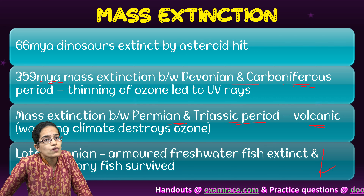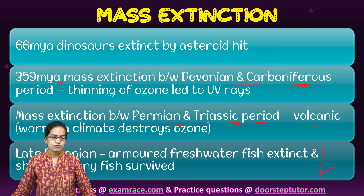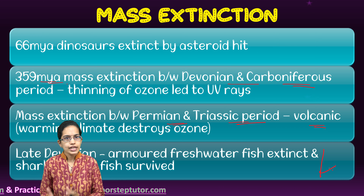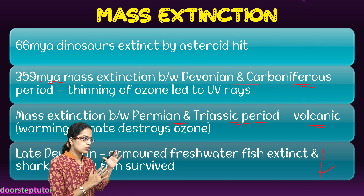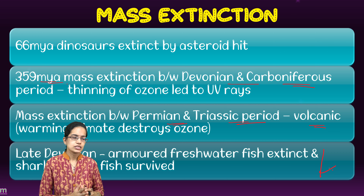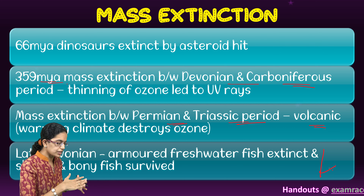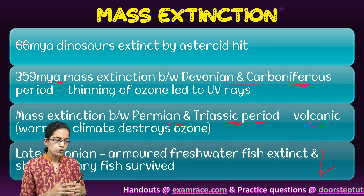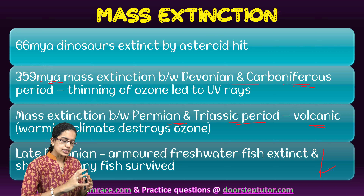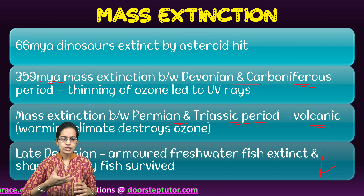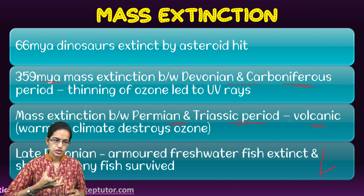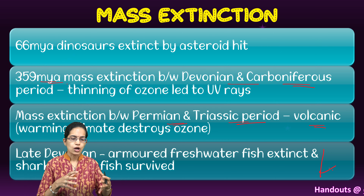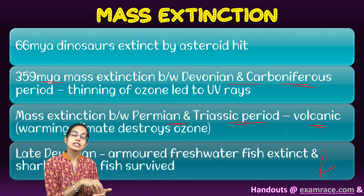Another important study focuses on mass extinction. It is believed that 66 million years ago, when dinosaurs went extinct, it was due to an asteroid impact. Similarly, 359 million years ago an extinction occurred between the Devonian and Carboniferous periods, now believed to be due to thinning of the ozone layer caused by ultraviolet ray exposure. The mass extinction between the Permian and Triassic periods was due to volcanic eruption, which ultimately led to climate change and destruction of the ozone.